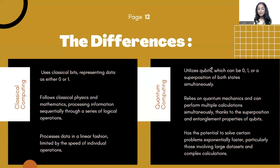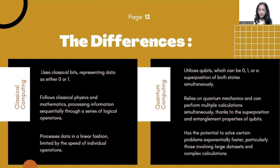Let's see the differences between classical computing and quantum computing. Classical computing uses classical bits representing data as either zero or one, whereas quantum computing utilizes qubits which can be zero, one, or a superposition of both states simultaneously. Classical computing follows classical physics and mathematics, processing information sequentially, whereas quantum computing relies on quantum mechanics and can perform multiple calculations simultaneously, thanks to the superposition and entanglement properties of qubits.